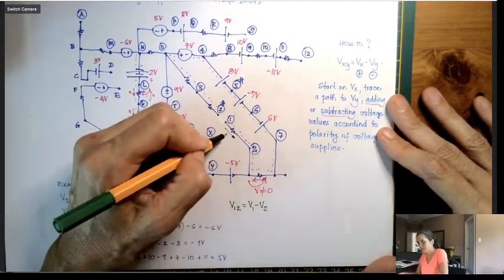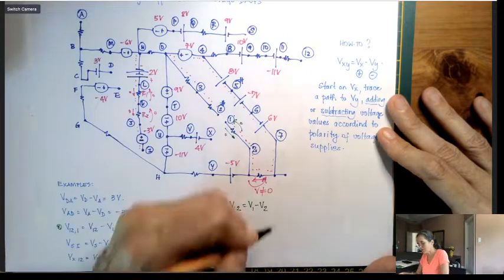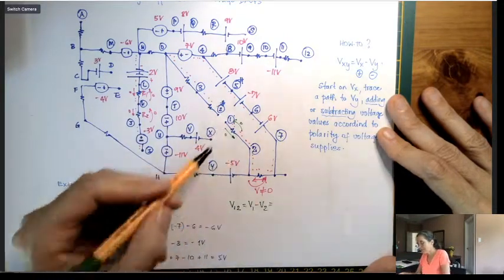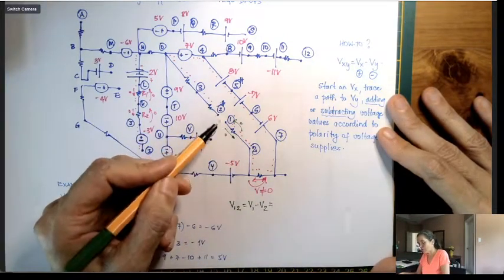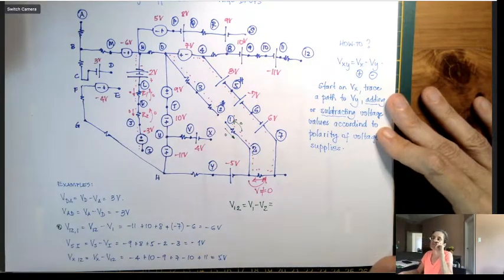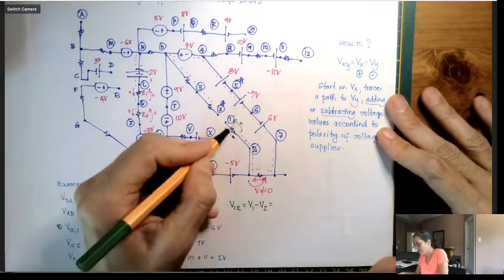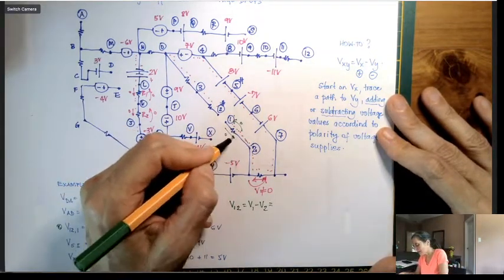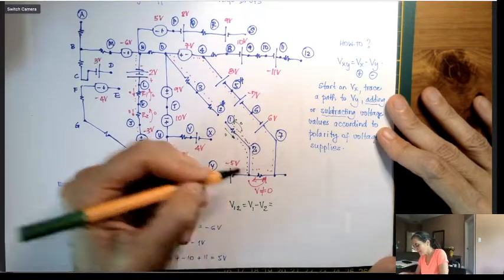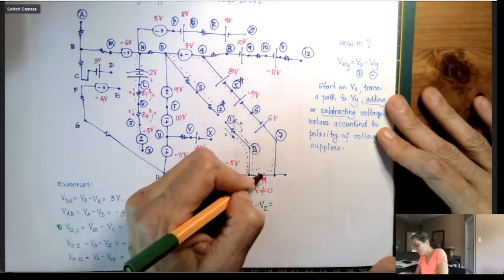And therefore, this voltage drop here is 0. So I'm not going to count it. But then I need to come to 2. So there are two paths to go V1 to V2. So I can go the green path. I'm going to make here a green dotted line. That means I'm going to go through this resistor here.